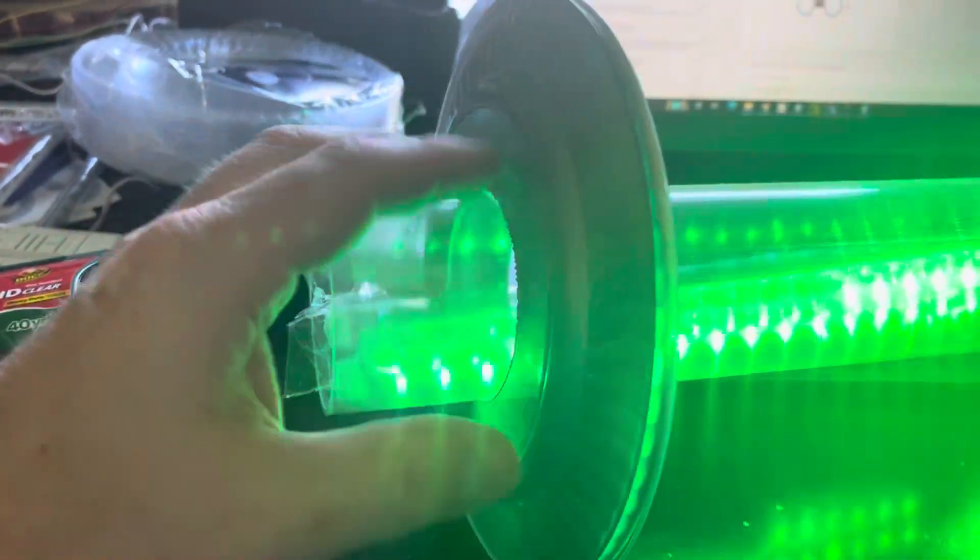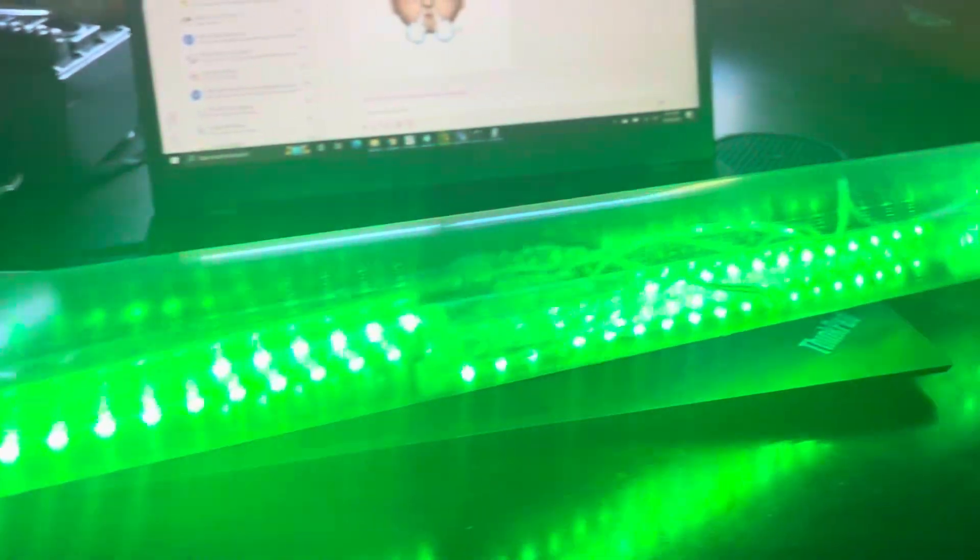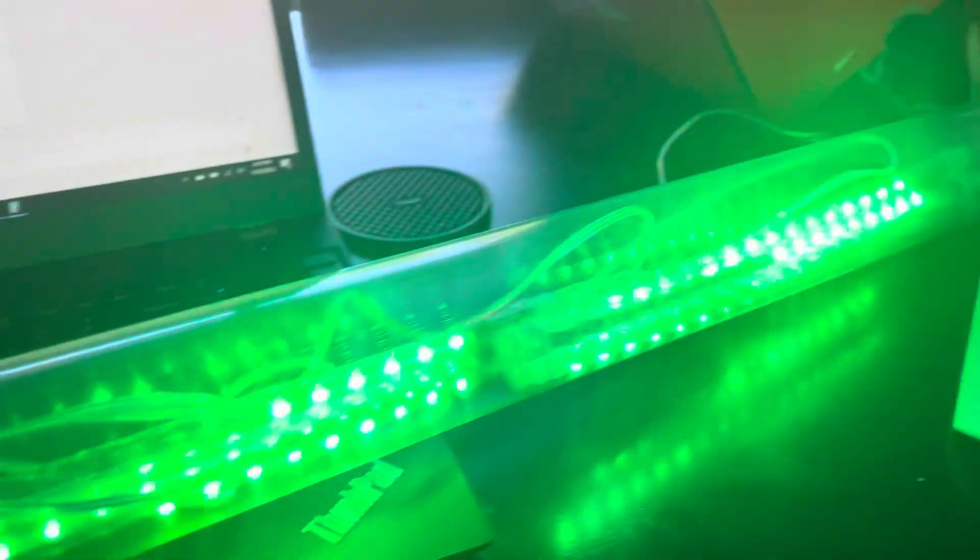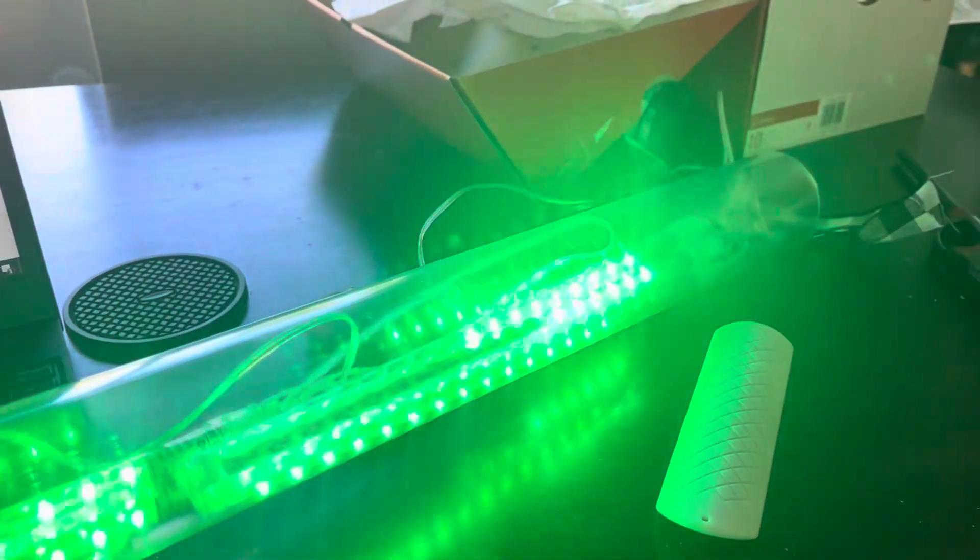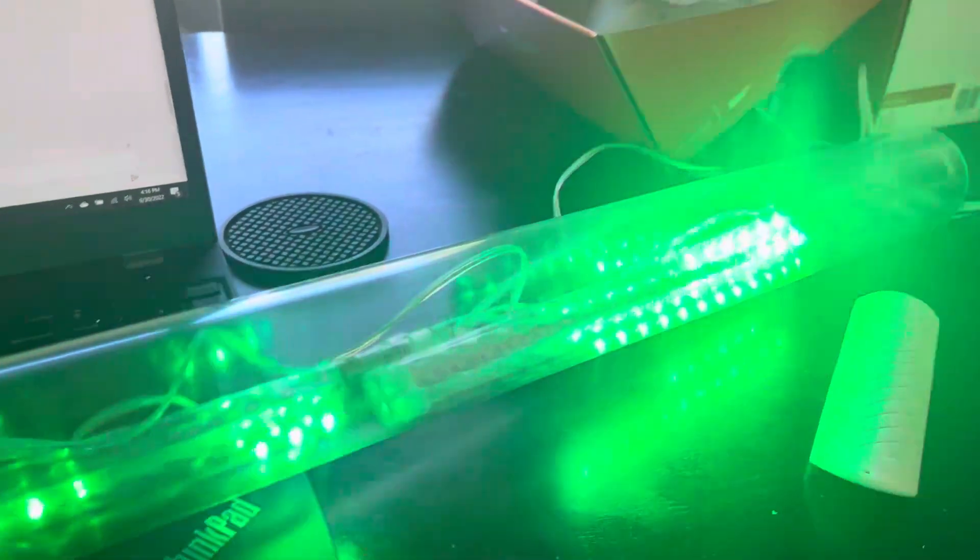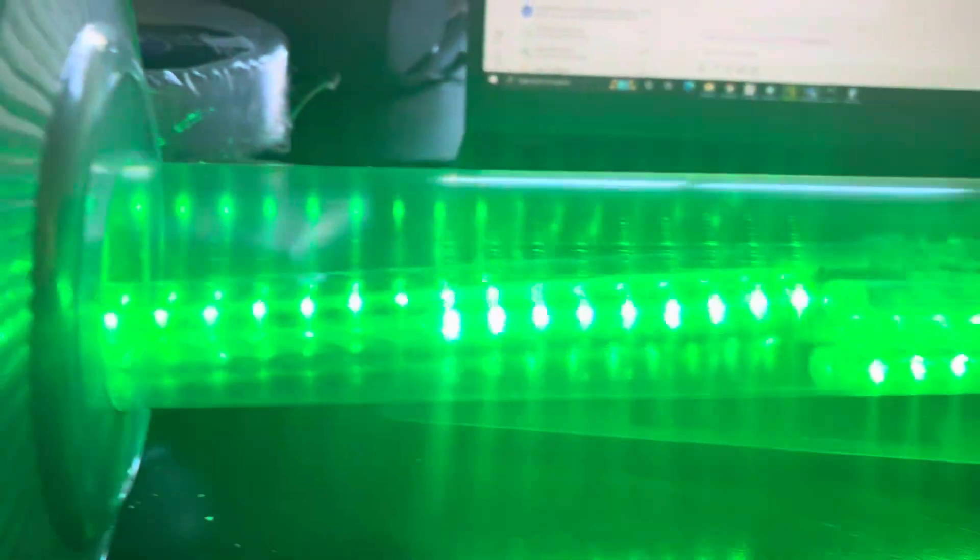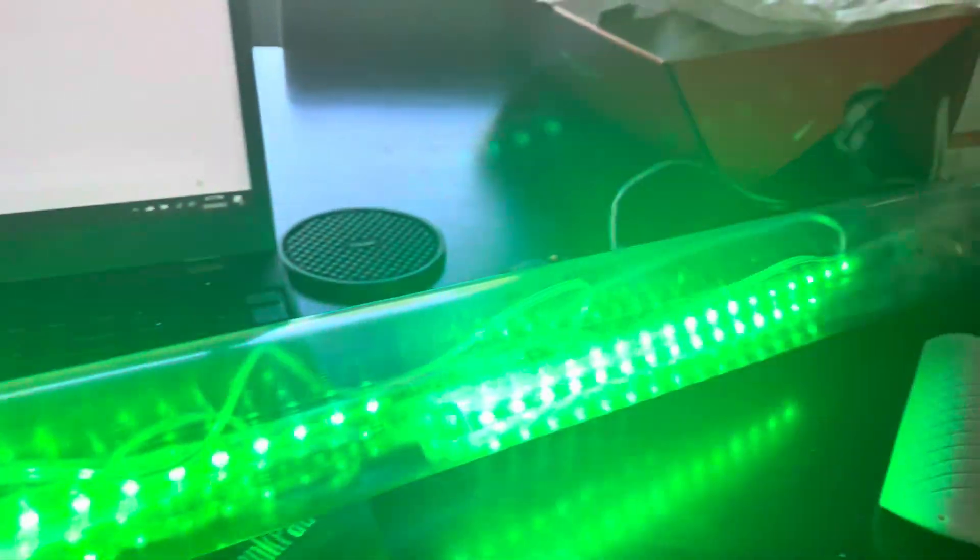Next, you want to get a clear tube. This is a dust tube for like a dust system or something. I'll provide the link. Tape your lights, your icicle lights in groups of three. And then the top one will just have four in it.